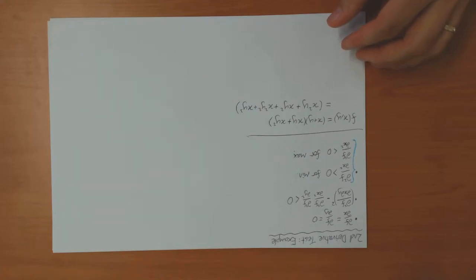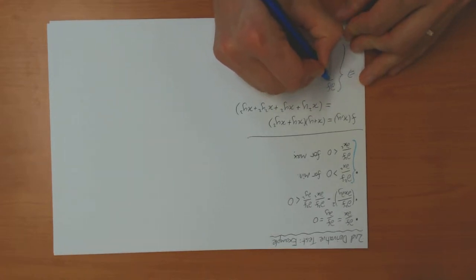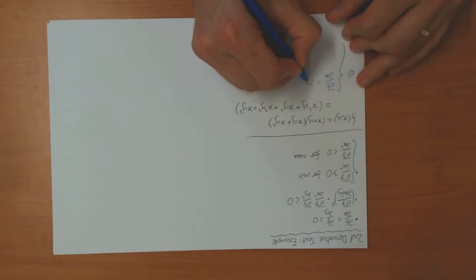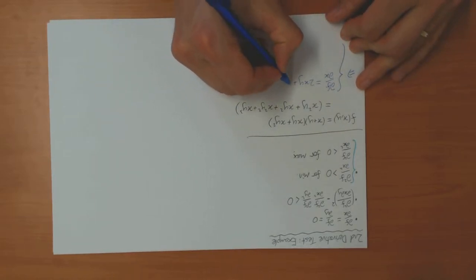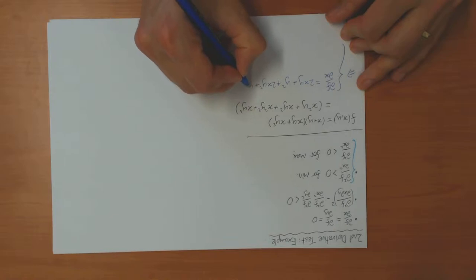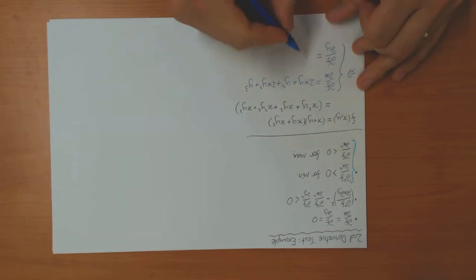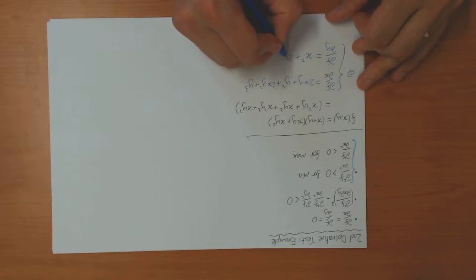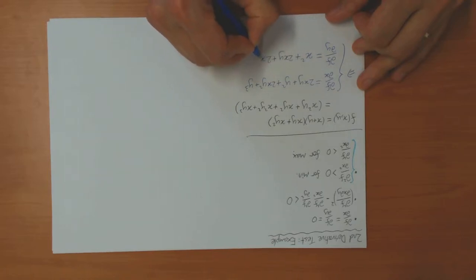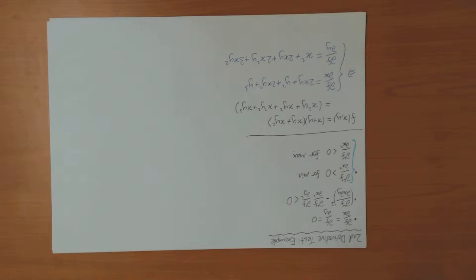The derivatives are: df/dx = 2xy + y² + 2xy² + y³, and df/dy = x² + 2xy + 2xy + 3xy². So there are the first derivatives.